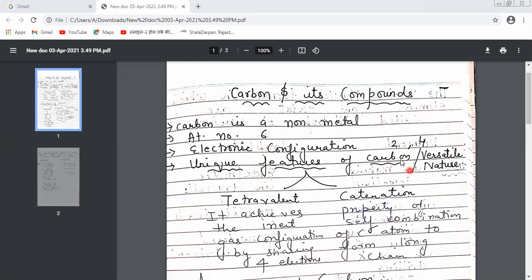It will form covalent bonds, not ionic bonds, because it has four electrons. Now, what are the unique features of carbon that make it special enough to have its own chapter in grade 10?